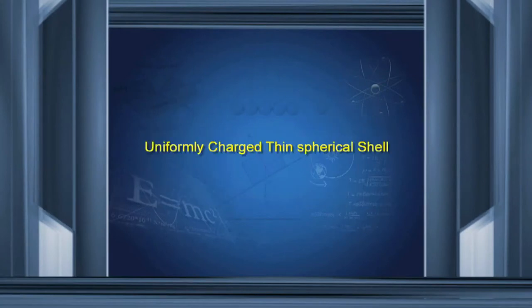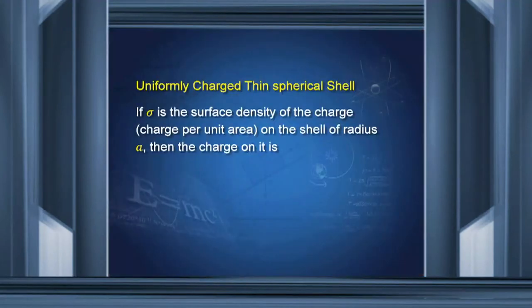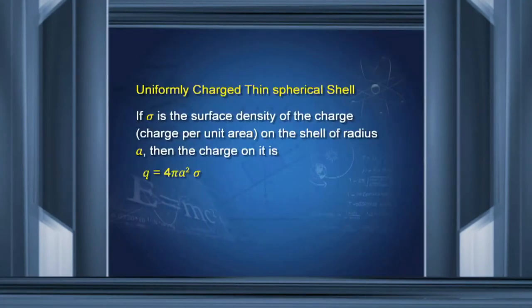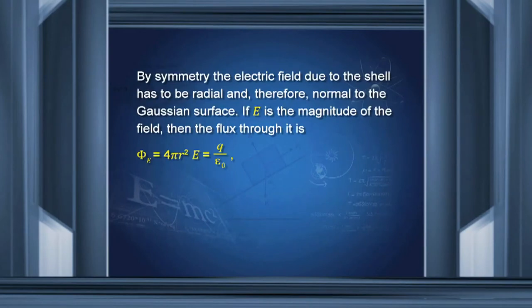Let us now take a uniformly charged thin spherical shell — a sphere with very small thickness, empty inside. If σ is the surface charge density, the charge per unit area on the shell of radius A, then the charge on it is 4πA²σ. For points outside the sphere at distance R from the center of the shell, the field will be as due to the total charge placed at the center of the shell, as we will now show formally.